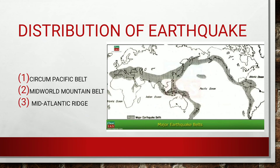Regarding the distribution of earthquakes, the main earthquake belts of the world include the Circum-Pacific Mountain Belt, which accounts for 70% of all earthquakes in the world. Part of the San Andreas Fault in the USA lies in this belt, making California highly prone to earthquakes. Japan, the Philippines, and Indonesia all form parts of this belt and are prone to severe earthquakes.